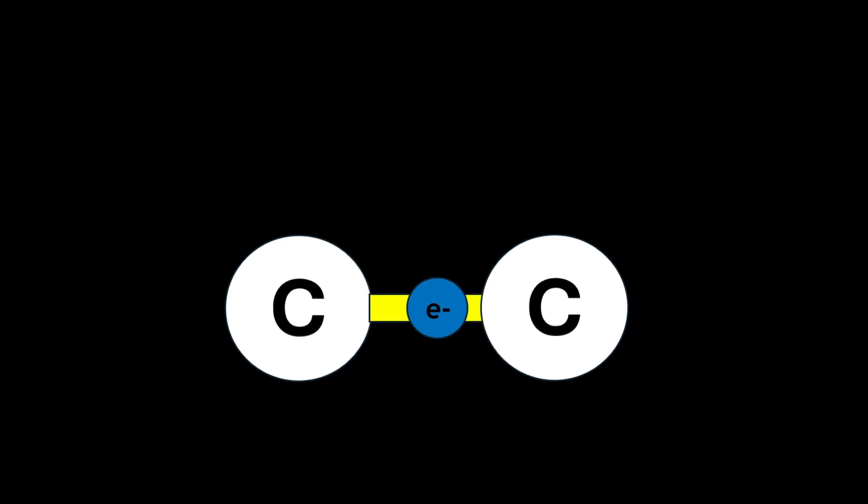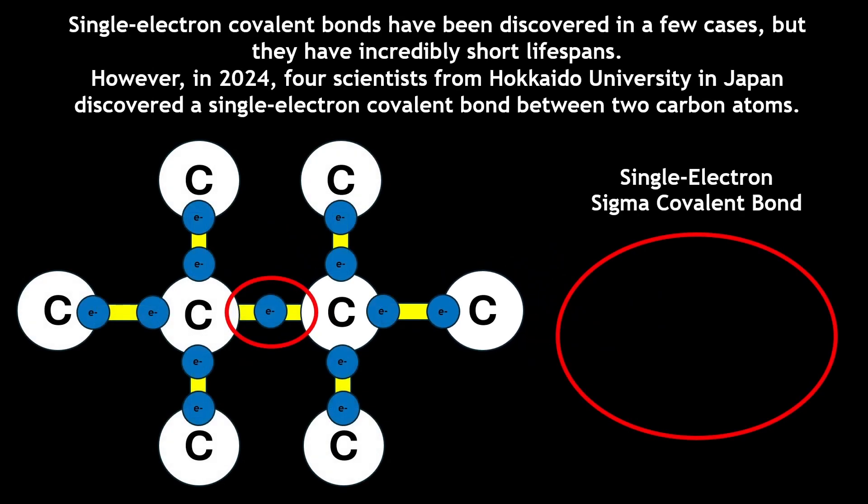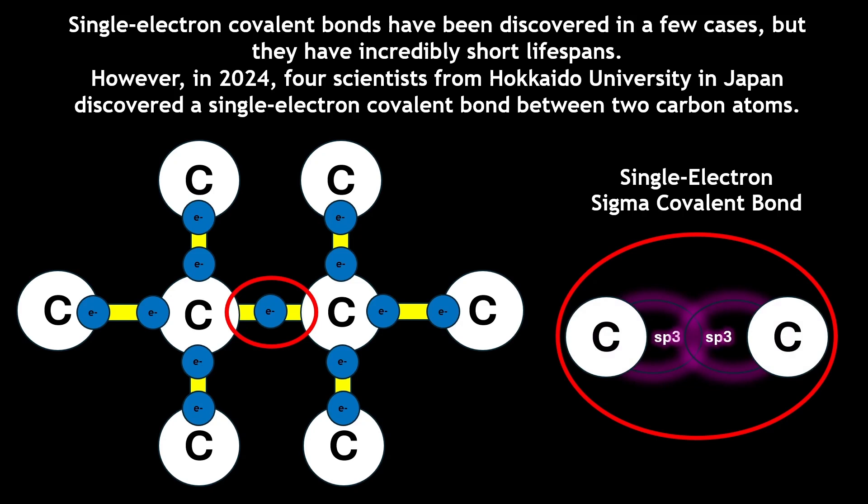The bond discovered is specifically a sigma bond, which is particularly strong because of the orientation of the electron clouds forming a direct overlap.